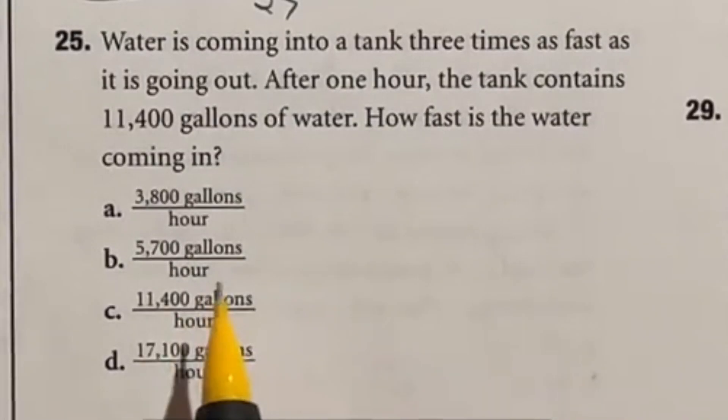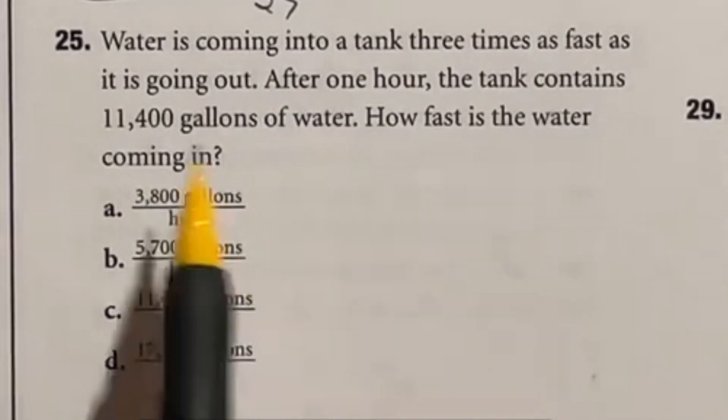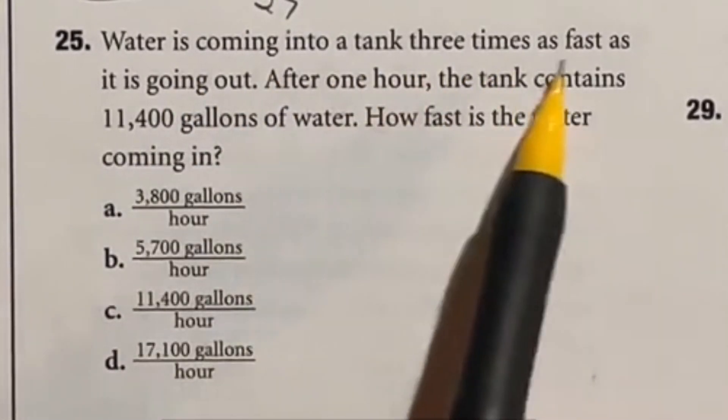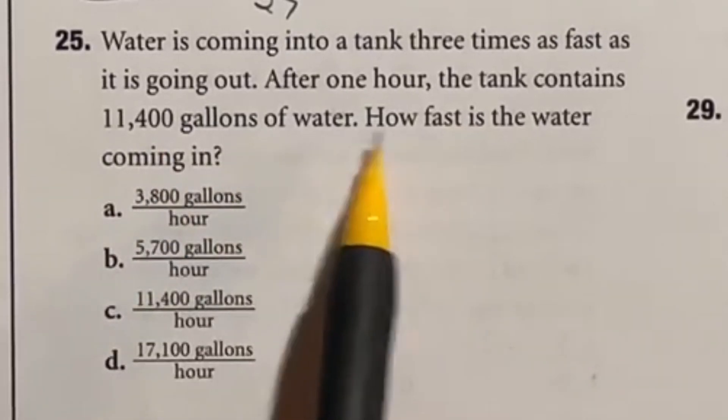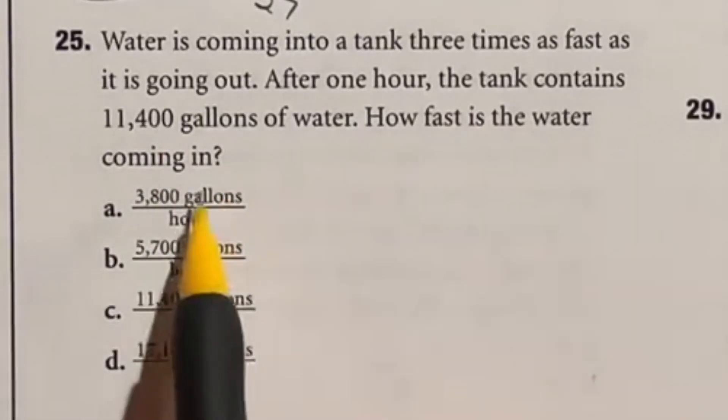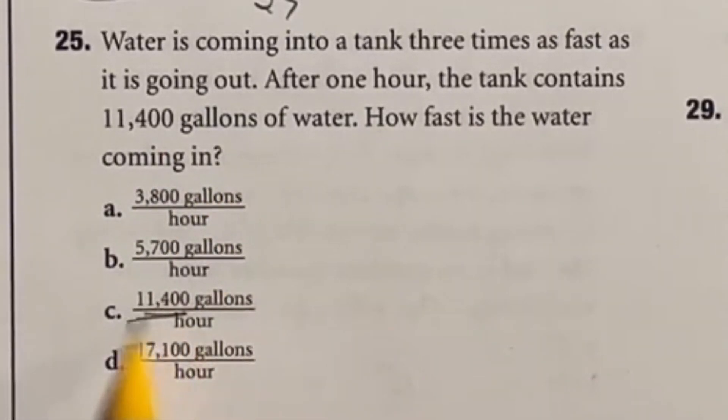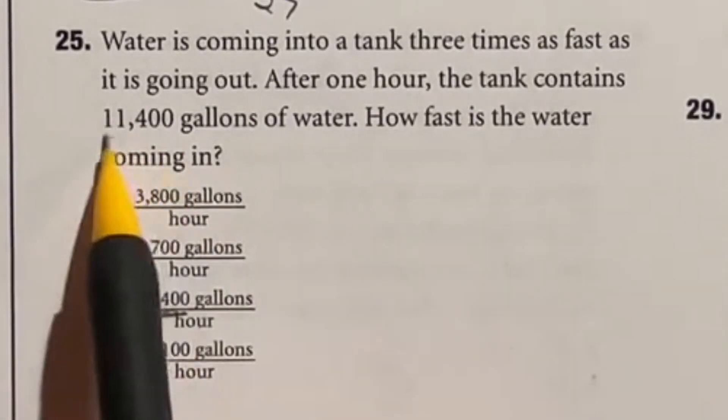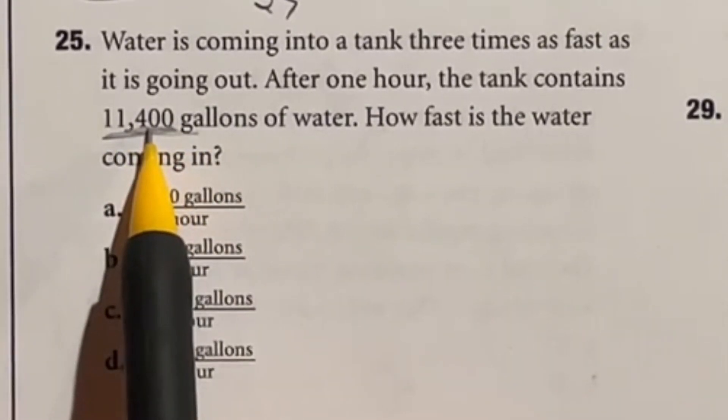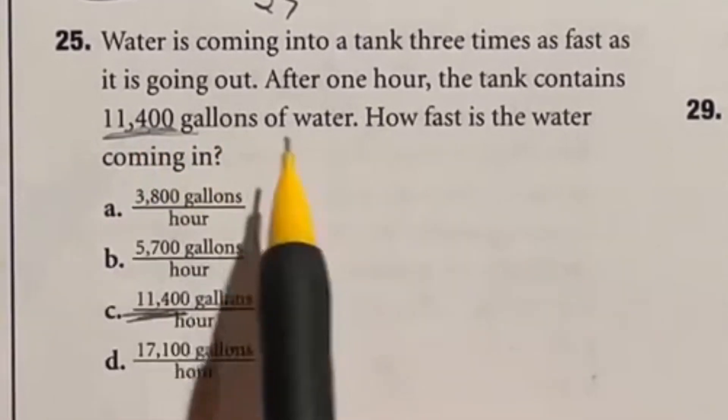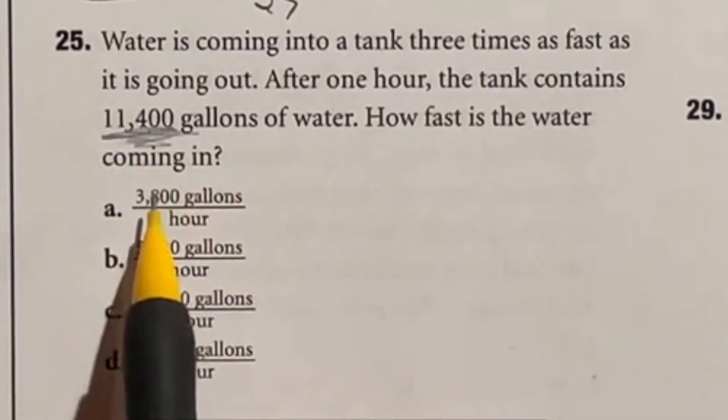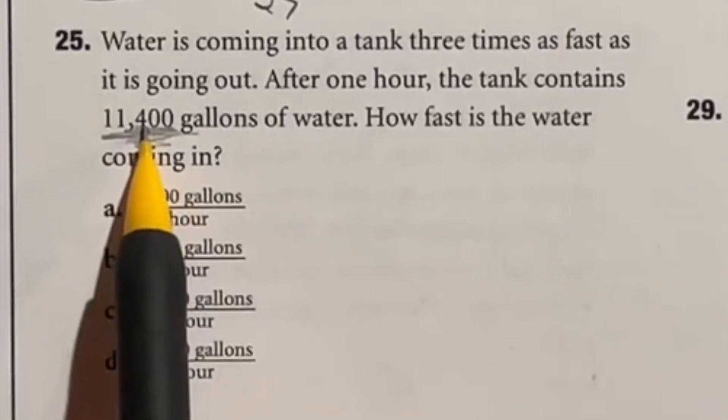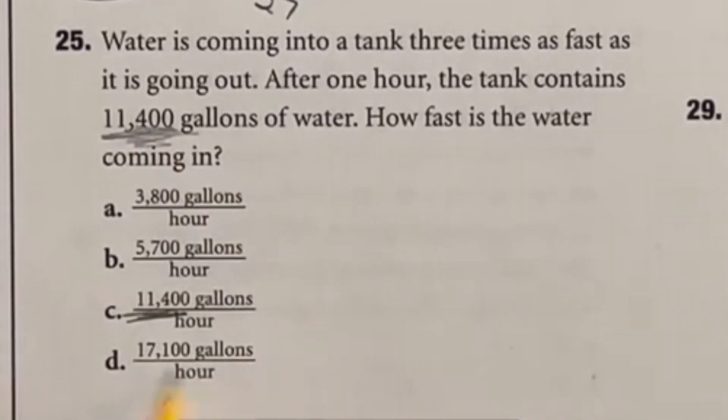Part of the ASVAB is speed so you have to recognize when questions are far easier than they seem. It says water is coming into a tank three times as fast as it's going out. After one hour the tank contains 11,400 gallons of water. How fast is the water coming in? Looking at these options we see 11,400 here and that's how many we currently have. But here's the deal after one hour we lost quite a bit of that. So that means that more than this amount had to go in in order for that to be left over since some dropped out. Well there's only one answer that's larger than that so our answer here must be D.